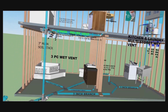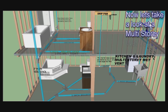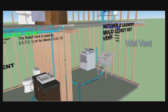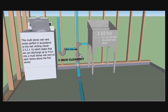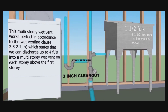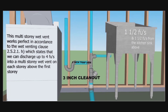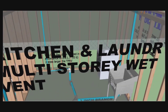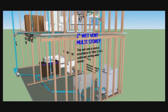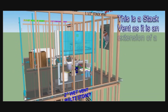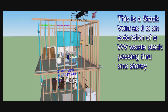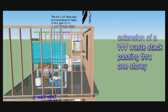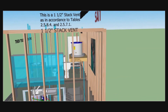Let's take a look at the kitchen and laundry multi-storey wet vent. This is perfect for a wet vent because, as you can see, we have a washing machine stand pipe with a vent and a laundry tray in the basement. This works out in accordance with wet venting Clause 2521, subsection H, which states that we can discharge up to 4 fixture units into a multi-storey wet vent on each storey above the first storey. Here we have 1.5 fixture units from the laundry tub and 1.5 fixture units from above in the kitchen sink, giving us a 2-inch wet vented waste stack. This stack vent, as an extension of the wet vented waste stack, passes through one storey and is sized according to Clauses 2584 and 2571, giving us a 1.5-inch stack vent on top of the multi-storey wet vent.